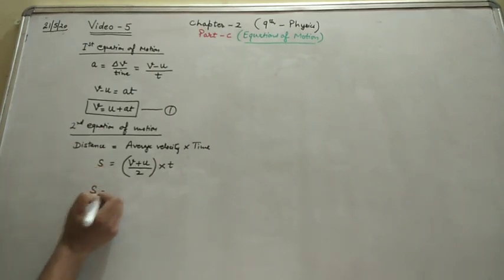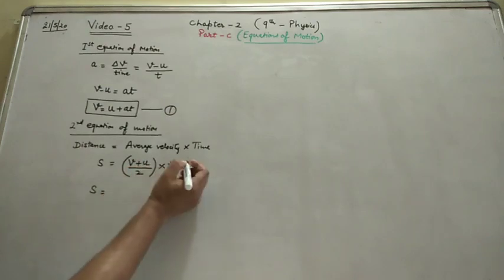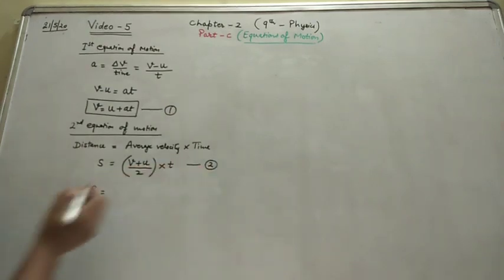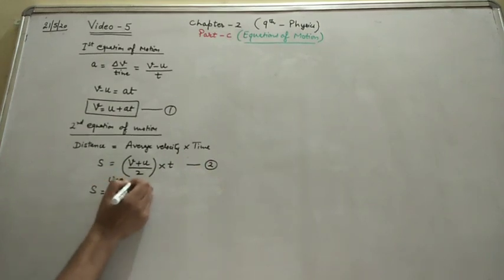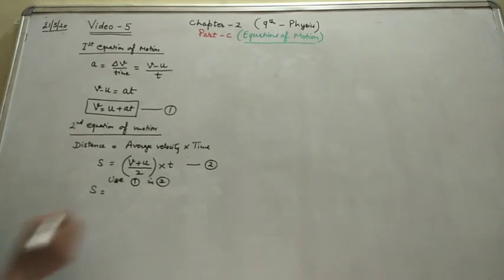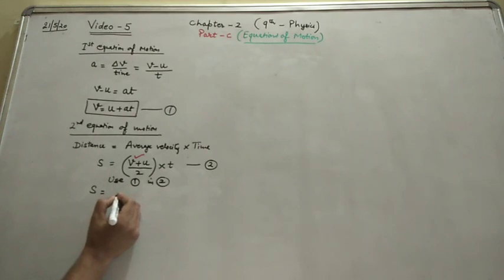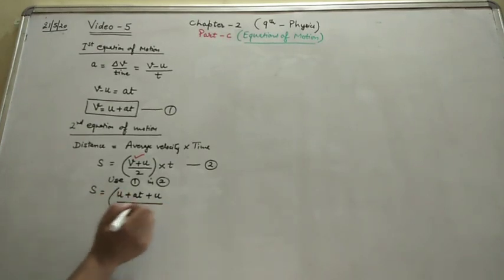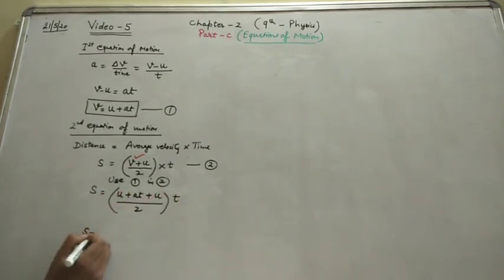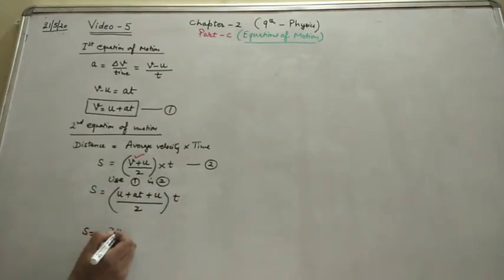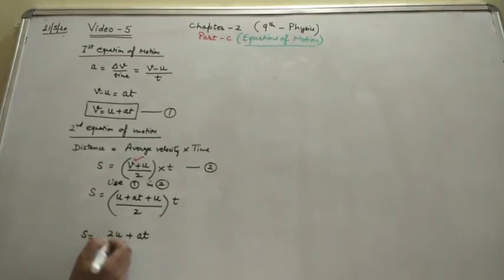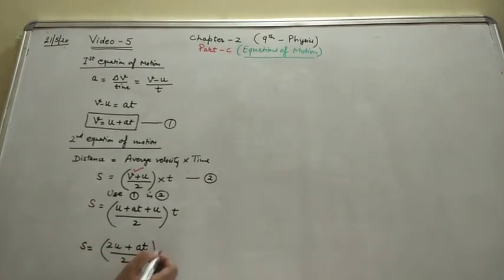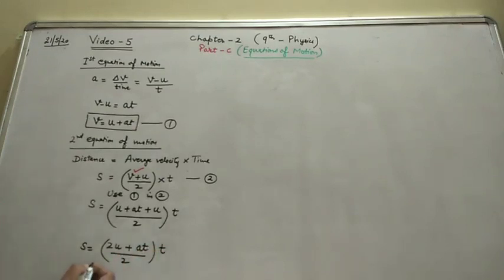Distance is represented by s. So s is equal to (V plus U) upon 2 into T. Here, in place of V, you can use U plus aT from the first equation. So s is equal to (U plus aT plus U) upon 2 into T, which gives 2U plus aT upon 2 into T.